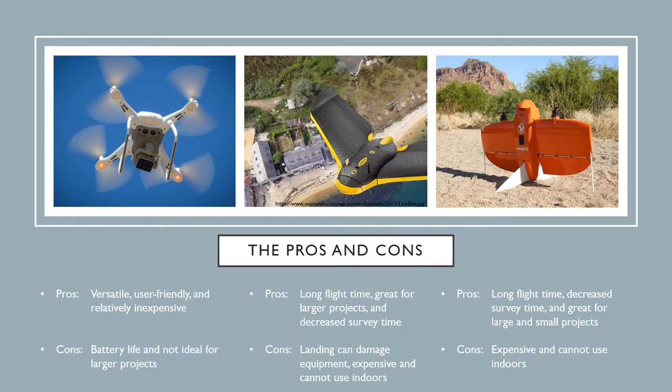On the right we have our hybrid or VTOL — this is a Wingtra, a very popular platform. Pros: very long flight time, some can fly longer than fixed wings, they decrease your survey time, and they're great for large and small projects because they take off vertically, land vertically, and then fly like a plane. The cons: Wingtra and similar platforms are very expensive and cannot be used indoors.